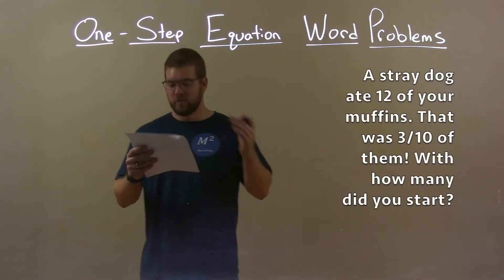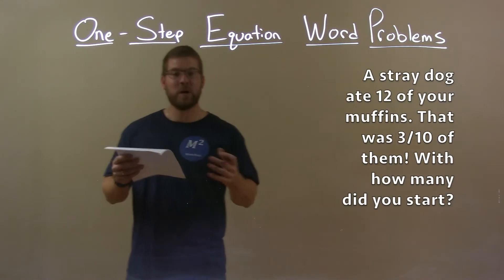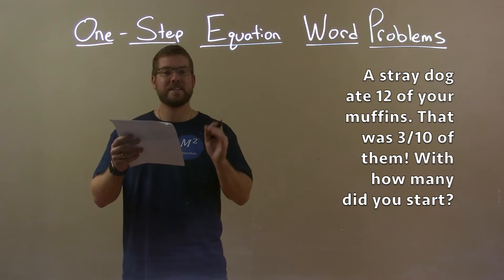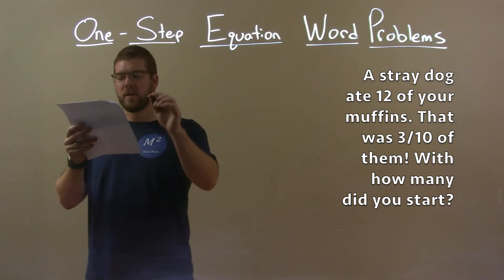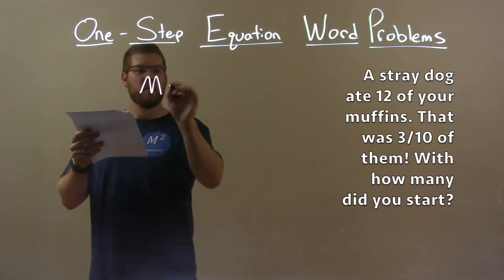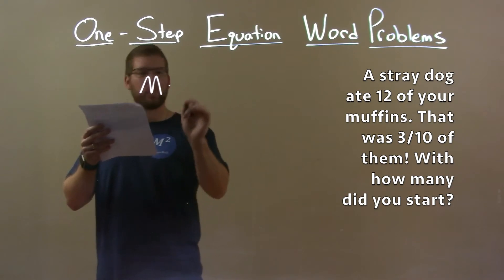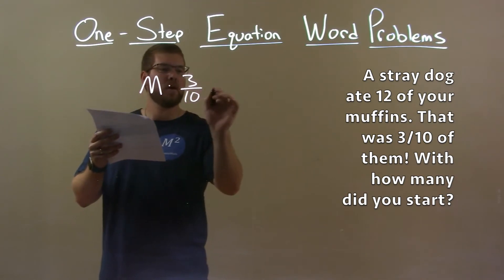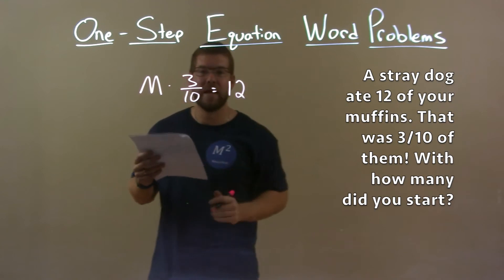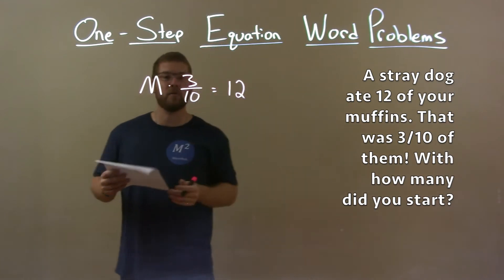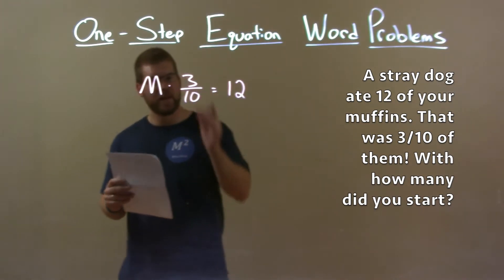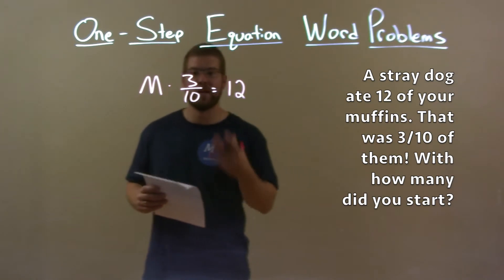The stray dog ate 12 of our muffins, and we found out that was three tenths. So the initial amount of muffins we want to find is M. They told us if we multiply M by three tenths, we will get the amount of muffins the stray dog ate — 12. Now we have an equation, and with that information we have to solve it.